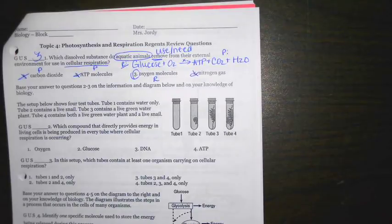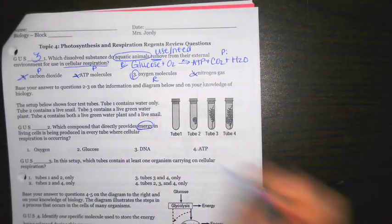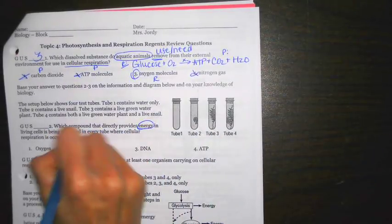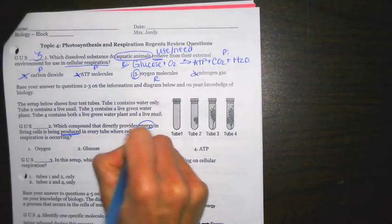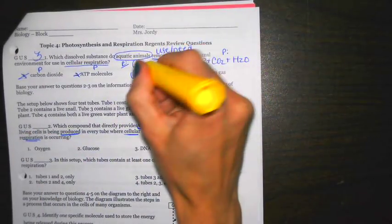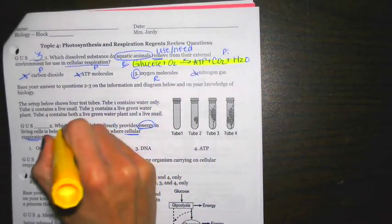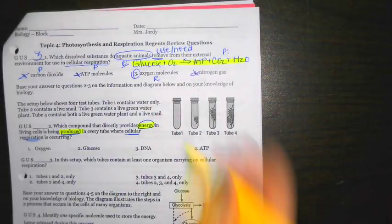Base your answers to questions two to three on the information and diagram below. The setup shows four test tubes. Tube one contains water only. Test tube two contains a live snail. Tube three contains live green water plant. Tube four contains both a live green water plant and a live snail. Which compound that directly provides energy in living cells is being produced in every tube where cellular respiration is occurring? So we're talking about energy. We have to think what the energy molecule is. It's being produced during cellular respiration. Again, we already wrote down the formula.